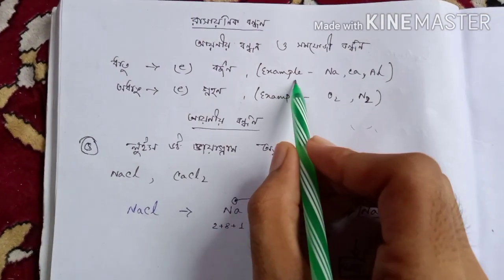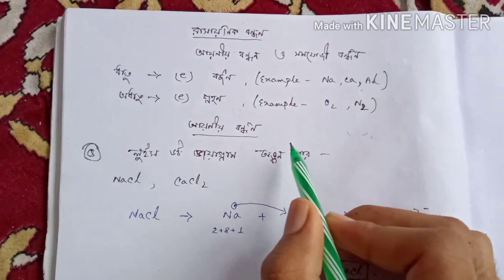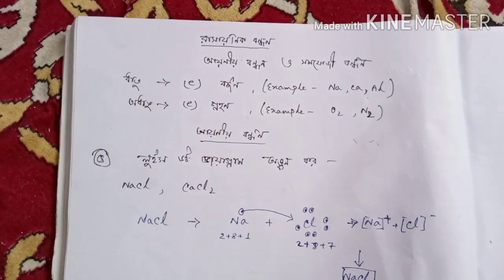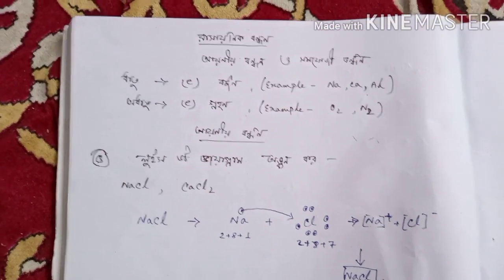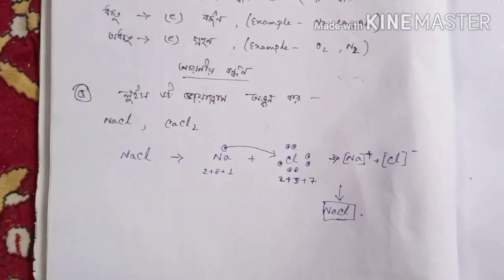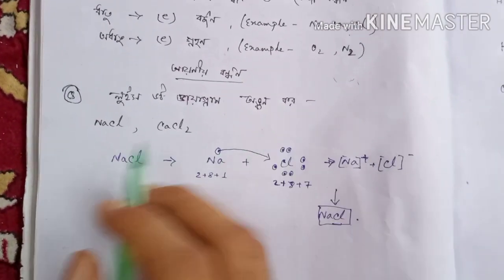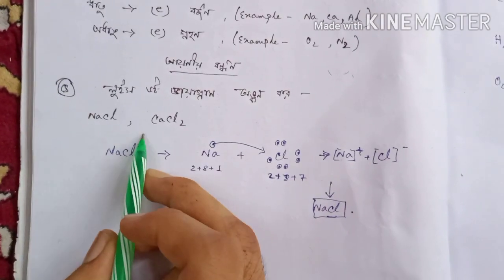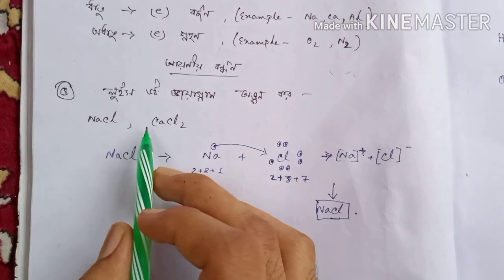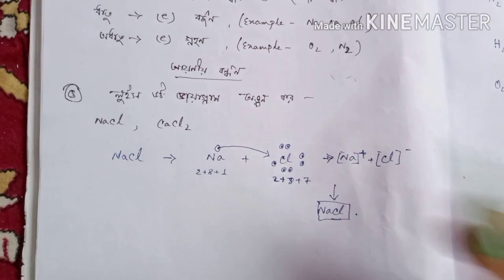For example, sodium, calcium, and aluminum — you can use oxygen. You can see that in this case NaCl, sodium chloride, calcium chloride, NaCl2.